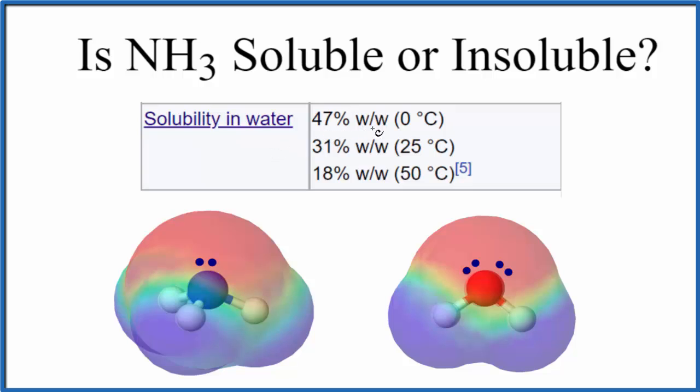47 percent weight by weight at zero degrees Celsius, so 47 grams in 100 milliliters of water for example. As it gets warmer, the solubility actually decreases, and that's the case with most gases. But based on this information, ammonia is very soluble in water.